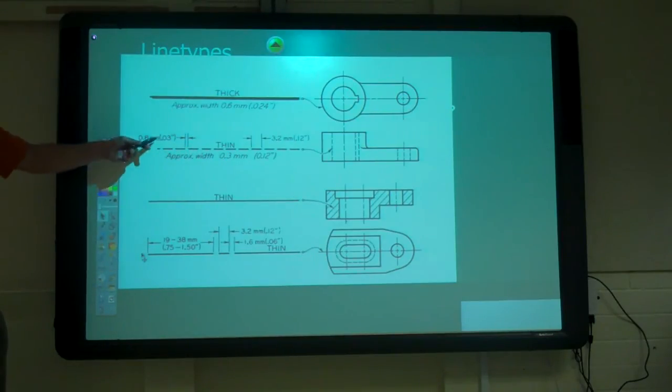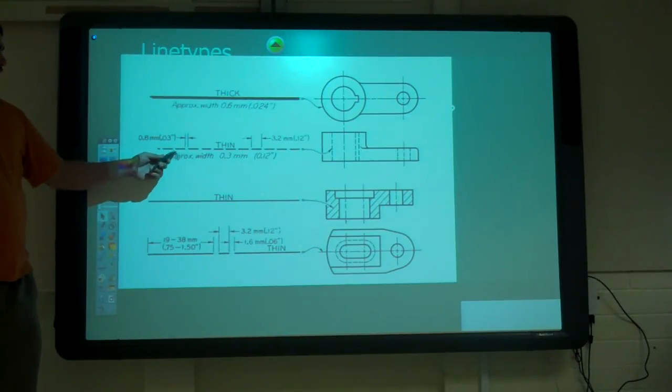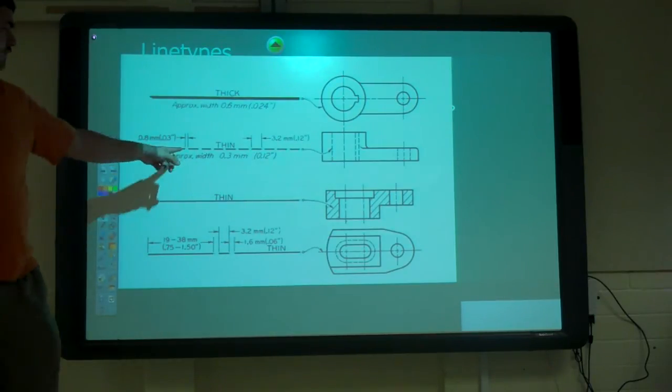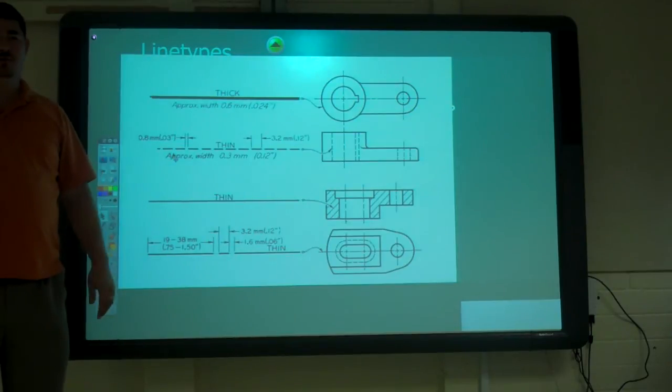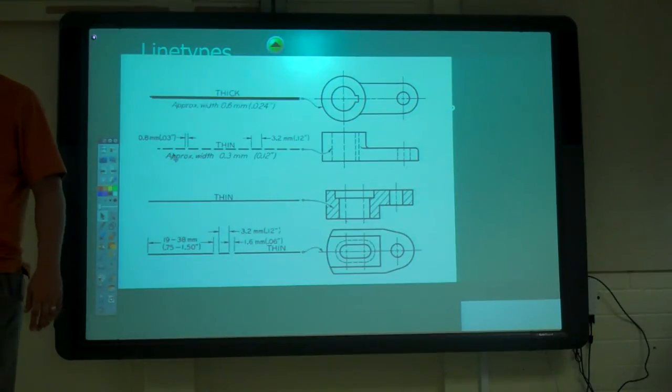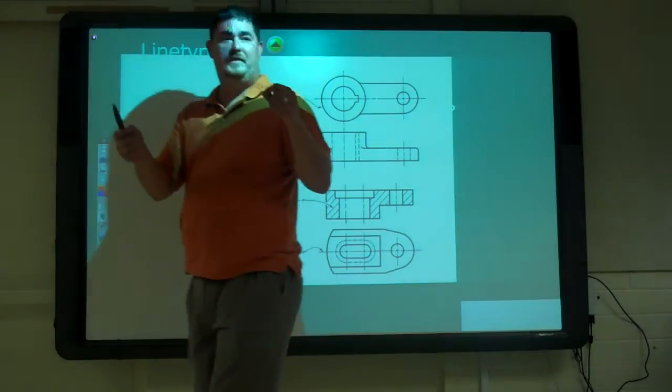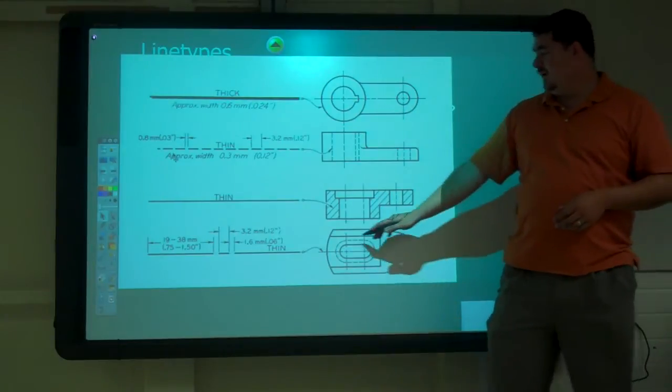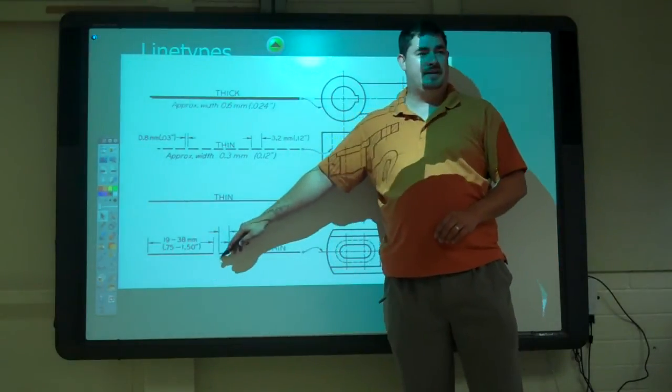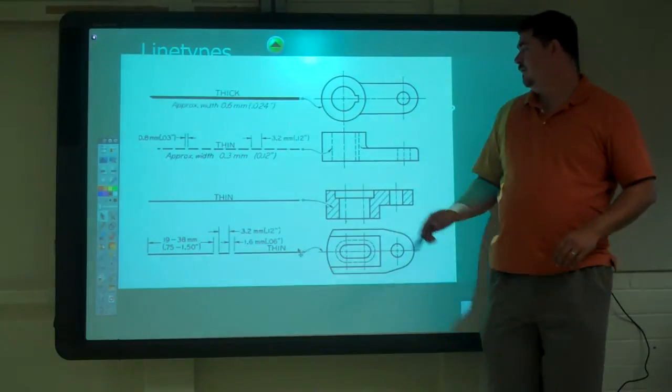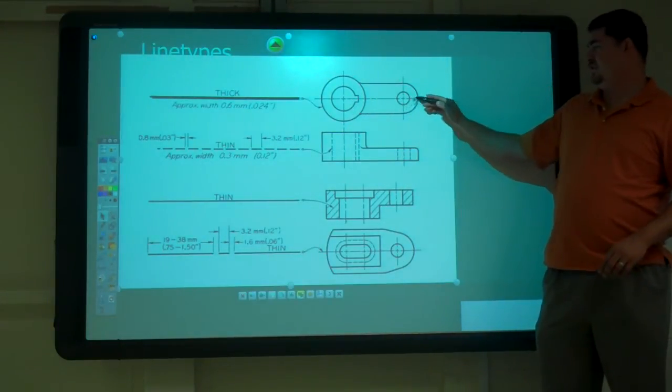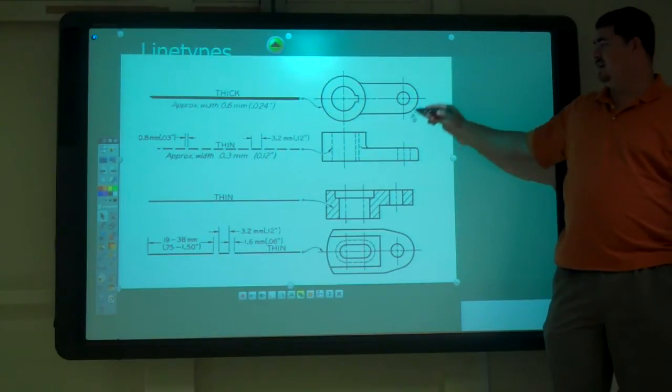Both center lines and hidden lines are thin lines and about an eighth of an inch for the dashes. Don't have to be exact, but they should all be kind of the same. The center lines, you see a long dash, and a short dash, and a long dash. So here we've got long dash, short dash, long dash, short dash, long dash. And it goes out past the outside circle.